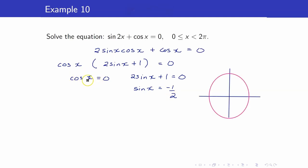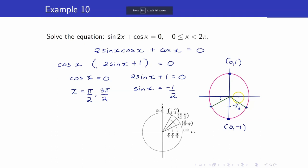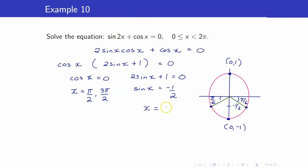First, let us solve cosine x equals 0. Cosine is the x-coordinate of your angle. The points on the unit circle with x-coordinate equal to 0 are at pi over 2 and 3 pi over 2. For sine x equals negative 1 half, sine refers to the y-coordinate. The y-coordinate is negative 1 half, and the reference angle is pi over 6. The angle in quadrant 3 is pi plus pi over 6, which is 7 pi over 6. The angle on the fourth quadrant is 2 pi minus pi over 6, which is 11 pi over 6.